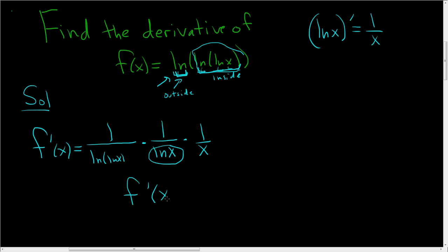So f prime of x is 1 over, I'm going to write it backwards. Let's write it x, parentheses ln x, parentheses ln, parentheses ln x. And that's it.